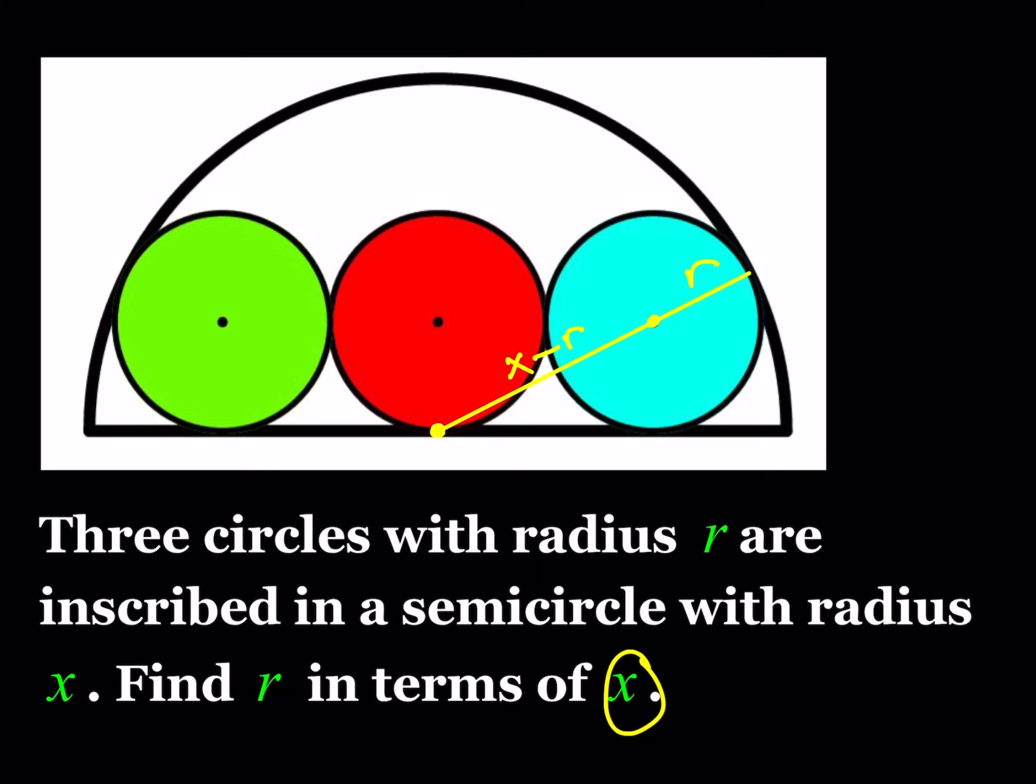What else do we know? I can just go ahead and drop perpendiculars here from the centers so that I can make a rectangle here, which is going to be helpful. Let's connect these two centers as well. If you consider the diameter of the semicircle, then we're getting a rectangle here.